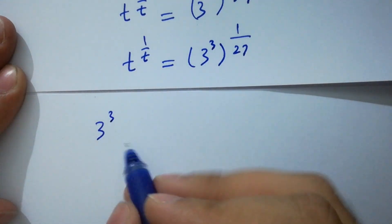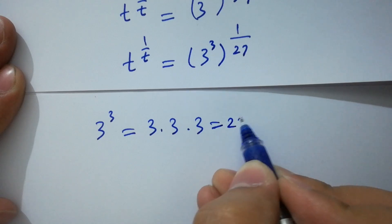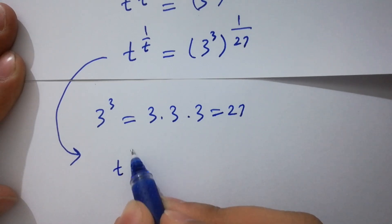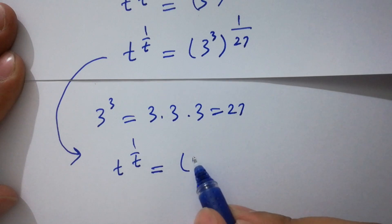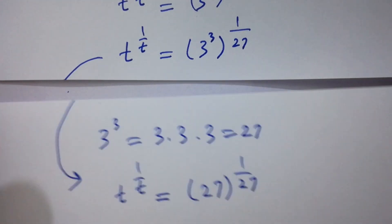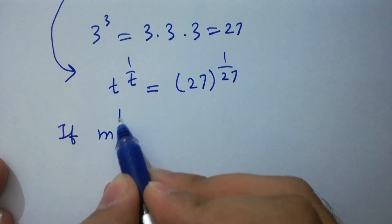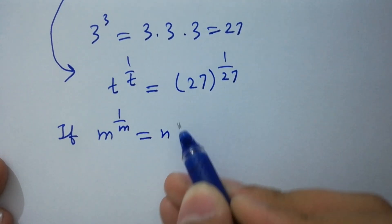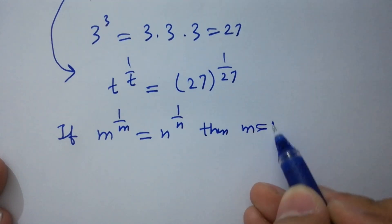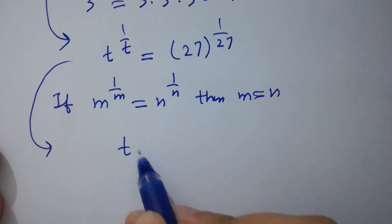As we know, 3 to the power 3 equals 3 times 3 is 9, and 9 times 3 is 27. So it will be t to the power 1 over t equals 3 cubed, which equals 27 to the whole power 1 over 27. Since if m to the power 1 over m equals n to the power 1 over n, then m equals n, we have the value of t which is 27.